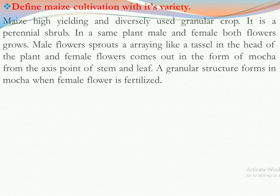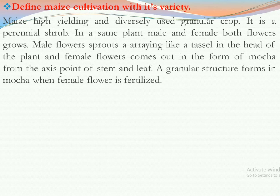First, let us know about maize cultivation and its variety. Maize is a high yielding and diversely used granular crop. It is a perennial shrub. In the same plant, both male and female flowers grow. The male flower sprouts an arrow-like tassel at the head of the plant, and female flowers come out in the form of a cob from the junction point of the stem and leaf. A granular structure forms in the cob when the female flower is fertilized.